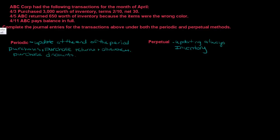Let's start with perpetual. So let's look at the first entry. We know we're dealing with a purchase because the entry says: purchased $3,000 worth of inventory, terms 2/10 net 30. On April 3rd we purchased inventory. What does 2/10 net 30 mean? Well, if we've got terms, that means it was on account — we're not talking about payment of cash here.